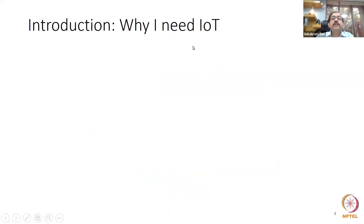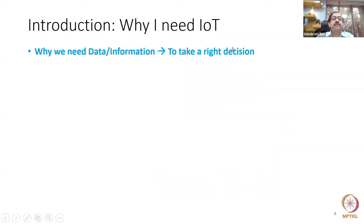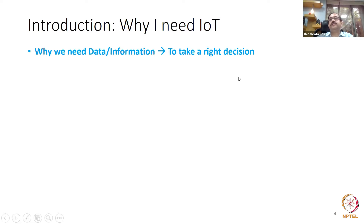Introduction: why do we need IoT? We need data and information to take the right decisions. For example, if you have data on different colleges, you take admissions accordingly. Similarly, when choosing electives, your friend gives you information about a subject and why it is important, and then you take that decision. To get the right decisions, we need data and information.